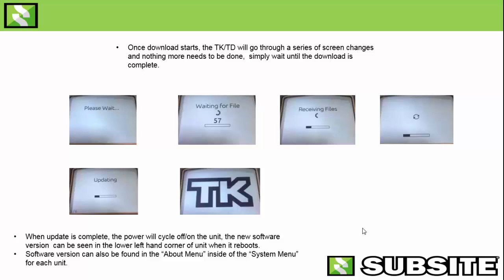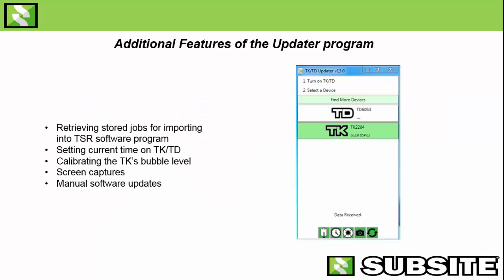Now you know how to update a tracker and display — it's a pretty simple process. But one thing I want to point out is you may see an 'updating failed' message come up on the tracker or display, or a data error on the TK Updater message bar. If this happens, don't panic. Simply close down the TK Updater program, cycle the power on the tracker or display, and get them both back open. I like to have the tracker or display on first, then open up the TK Updater program and let it scan again. Typically if you have an issue the first time, the second time it'll go right through.